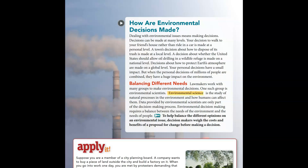How are environmental decisions made? Dealing with environmental issues means making decisions at many levels. Your decision to walk to a friend's house rather than ride in a car is made at a personal level. A town's decision about how to dispose of its trash is made at a local level. A decision about oil drilling in a wildlife refuge is made on a national level. Decisions about protecting Earth's atmosphere are made on a global level. When the personal decisions of millions of people are combined, they have a huge impact on the environment.